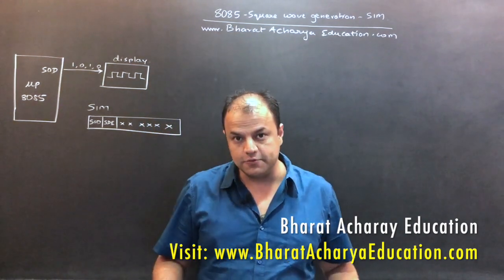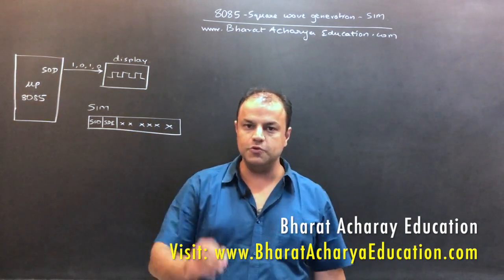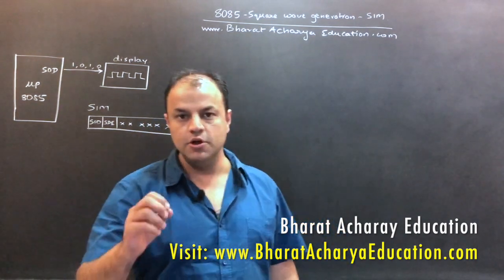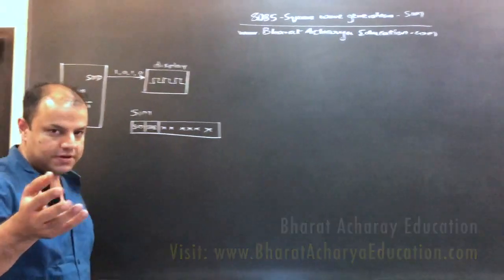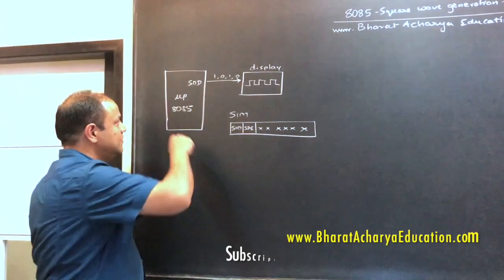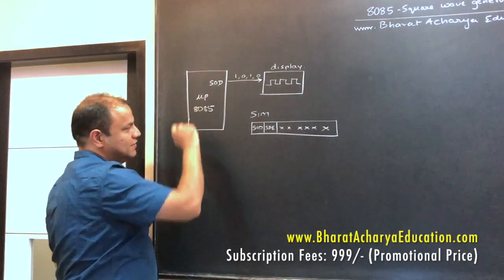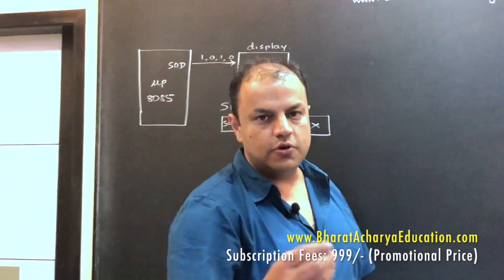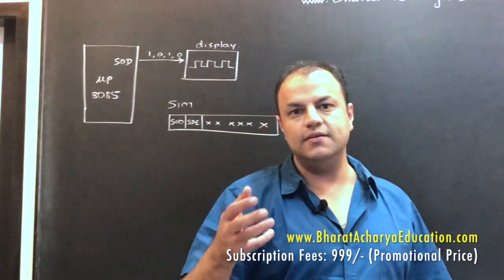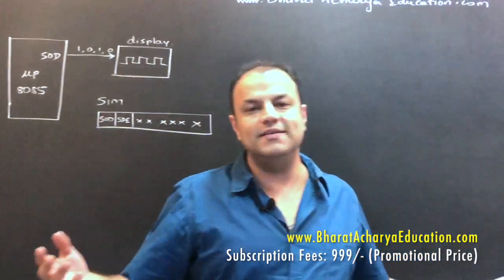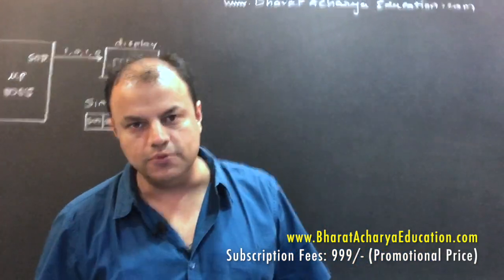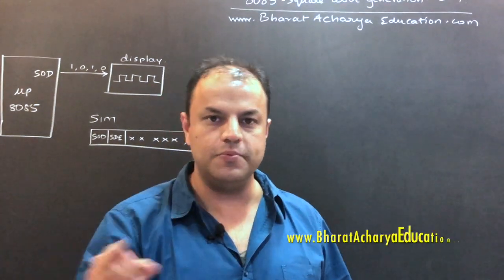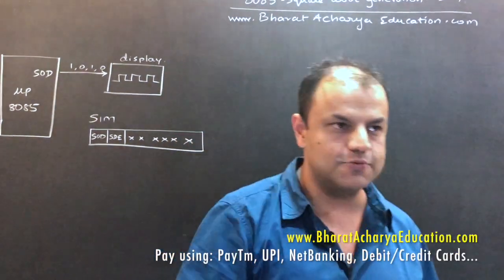Now in 8085, there are several ways of producing a square wave. The most popular one is using the SIM instruction, using the SOD pin. SOD stands for serial output data. So on that pin, you can send a 0 or a 1. That's exactly what you want to do — send a 0, send a 1, put it in a loop with the appropriate delay, and you get a square wave.